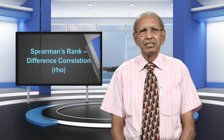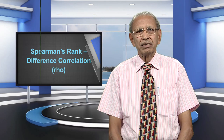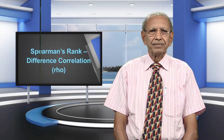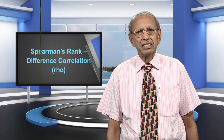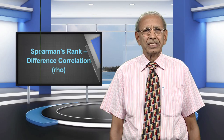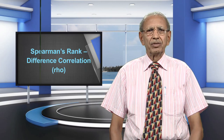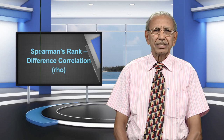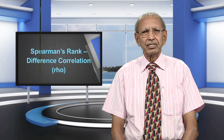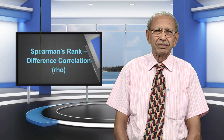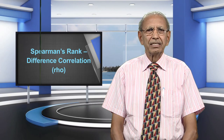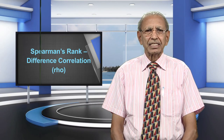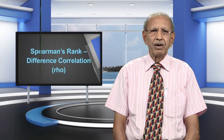In cases when distributions of scores are markedly skewed, measurements made with an interval or ratio scale can be transformed to ranks before the correlation is computed. Sometimes only ordinal scale data in the form of ranks is available, and the calculation of product moment R is not possible. In such situations, Spearman's rank coefficient Rho can be calculated. It is also useful when n is very small.